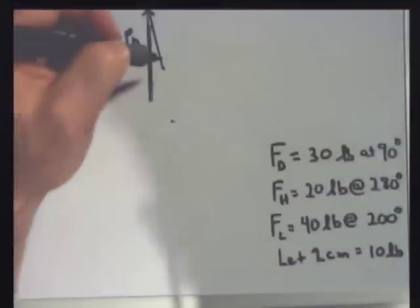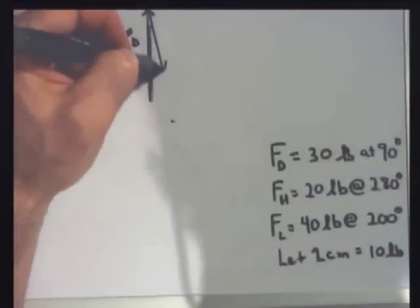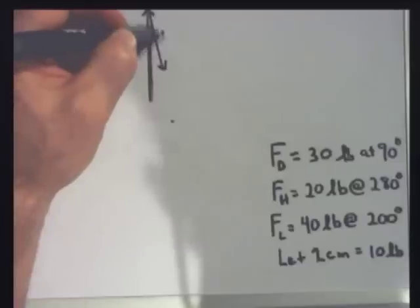So it's head to tail method. So I start right where I finished. 20 pounds, so I'm going to come down 4 centimeters. 1, 2, 3, 4. And I'll put an arrow in the direction that it's heading. So that's Han Solo.